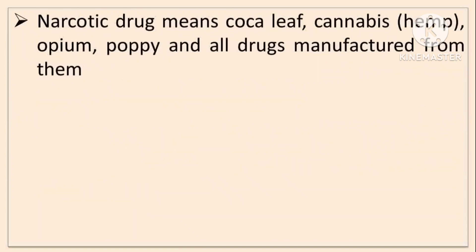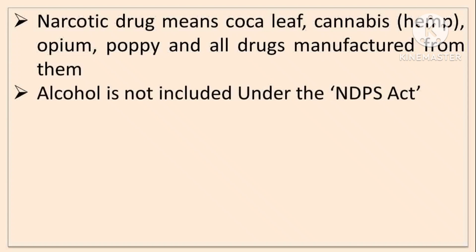Narcotic drugs include coca leaf, cannabis, opium, poppy and all the drugs manufactured from them — so, derivatives of all these. This is given in the Narcotic Drug and Psychotropic Substance Act 1985. Alcohol is not included under the NDPS Act.